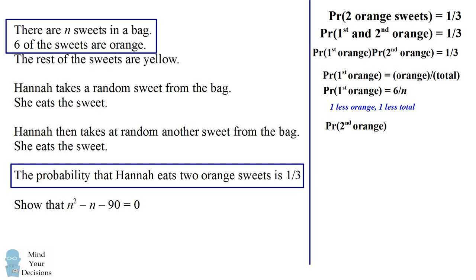You can think about this like drawing cards from a deck. If you draw an ace from the deck, what remains will have one fewer ace and one fewer card. So we have one fewer orange sweet which is 5, and one fewer candies in total which means n minus 1. So the conditional probability of drawing the second sweet as orange is 5 divided by n minus 1.